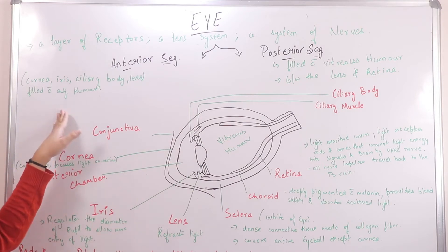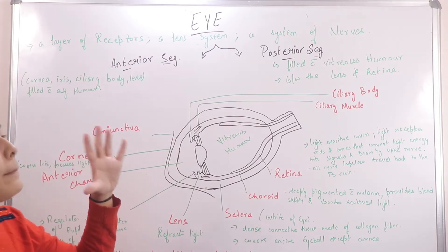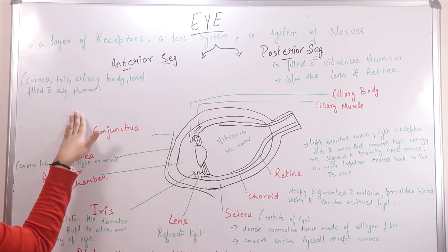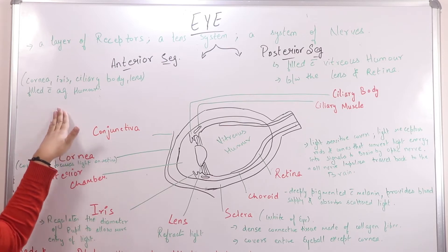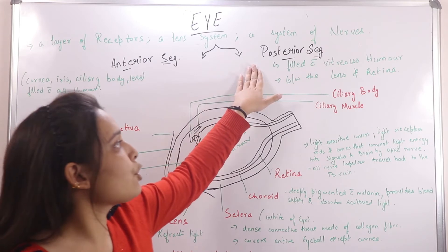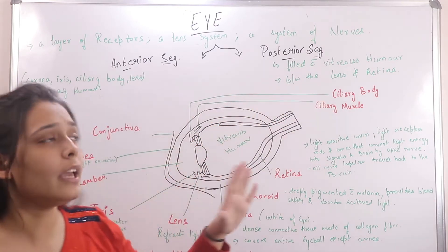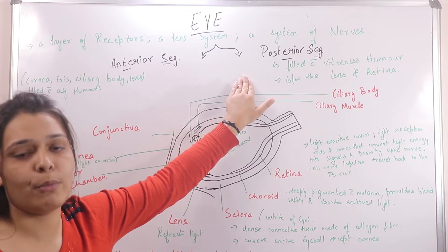In the anterior segment, the fluid present in the eye is called aqueous humor. This mainly provides nutrients to the eye and all the requirements. The posterior segment is filled with vitreous humor, which provides the shape of the eye.